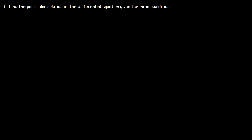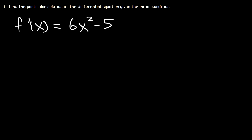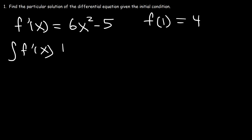Let's say that f'(x) is equal to 6x squared minus 5, and we're given the initial condition that f(1) is 4. Go ahead and solve that differential equation. So let's begin by finding the antiderivative of both sides of the function.